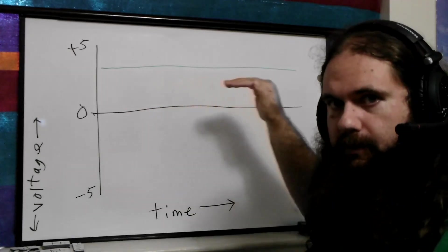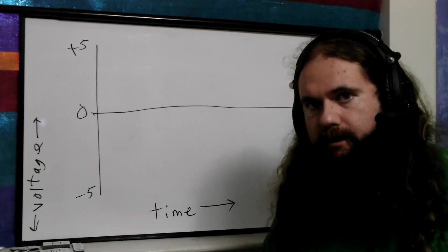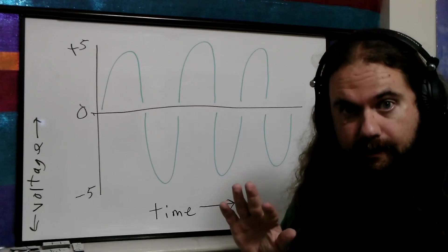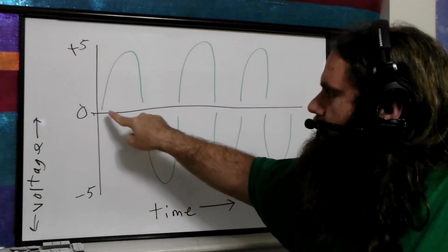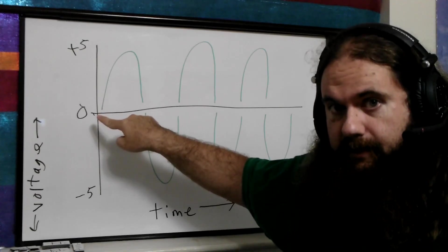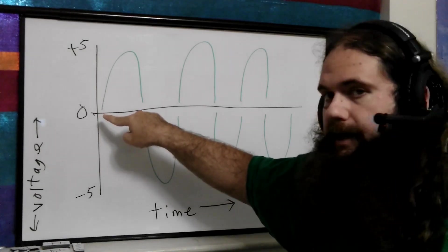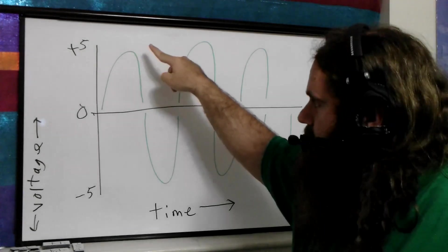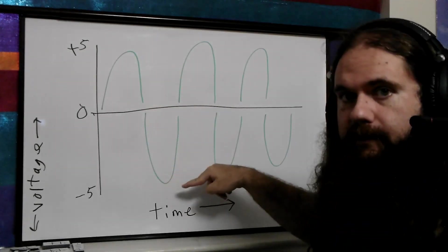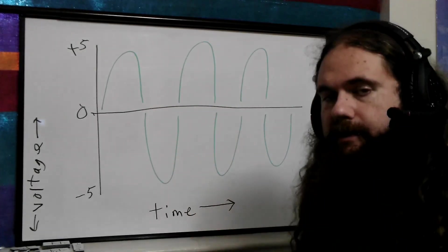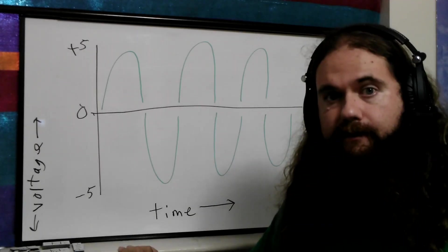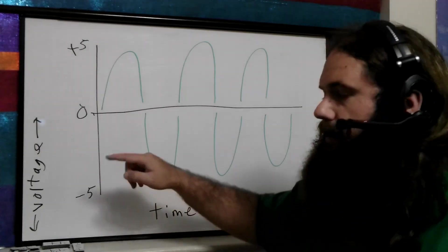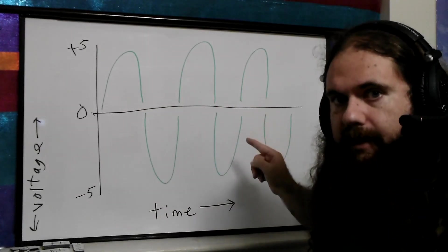Direct current is just a horizontal line on this plot. Alternating current looks like this: the voltage goes to zero, then gets more and more in one direction up to a peak, goes back down to zero, goes negative, and back up to zero. This is called a sinusoidal — you may have heard of it in trigonometry, but you don't have to worry about that. It just goes up and down in a regular cycle.